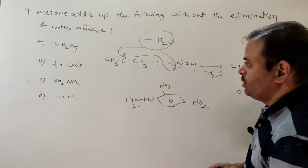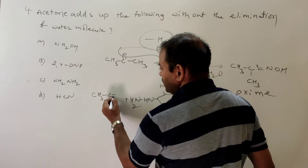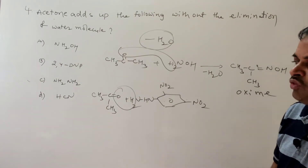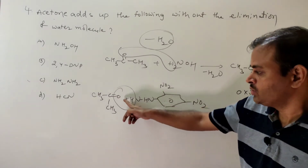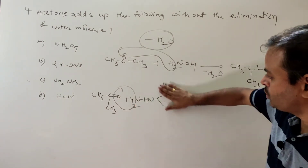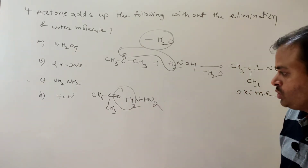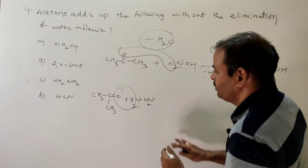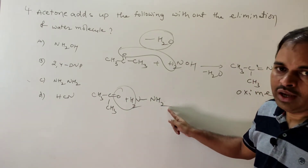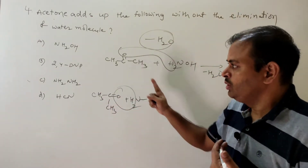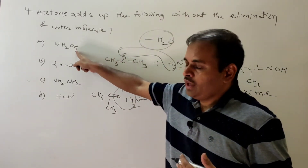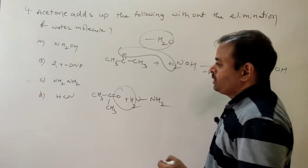With 2,4-DNP and acetone, loss of H2O takes place similarly. With hydrazine (NH2NH2), loss of H2O also occurs, giving the hydrazine product. So hydroxylamine gives oxyme, 2,4-DNP gives the corresponding 2,4-dinitrophenylhydrazone — all three involve elimination of water. The answer is HCN, because HCN addition to acetone does not involve elimination of water.